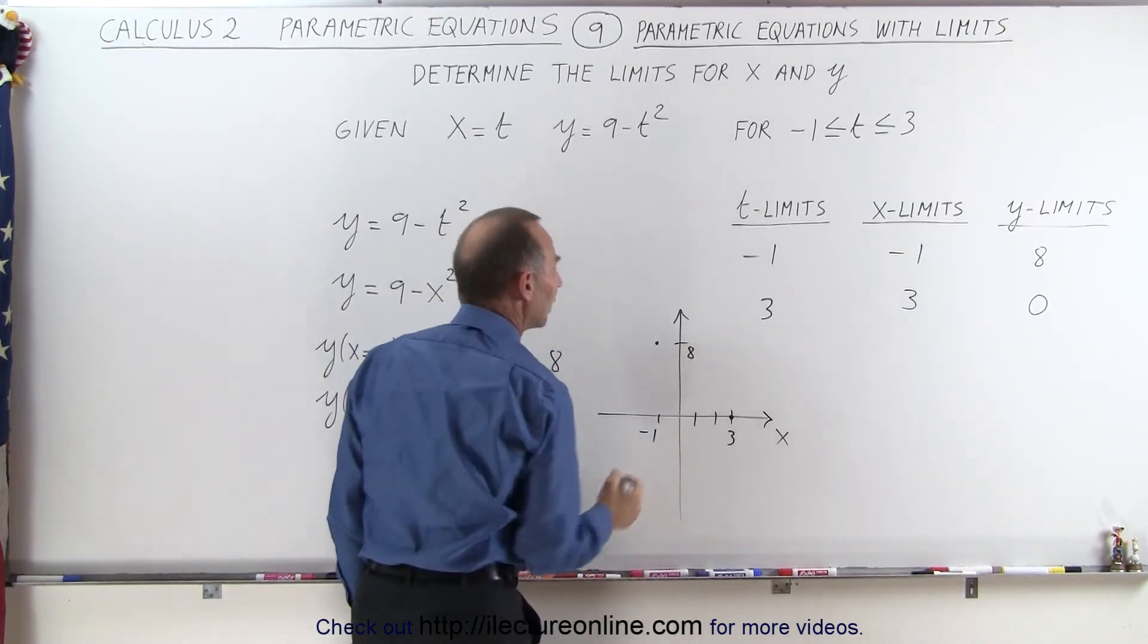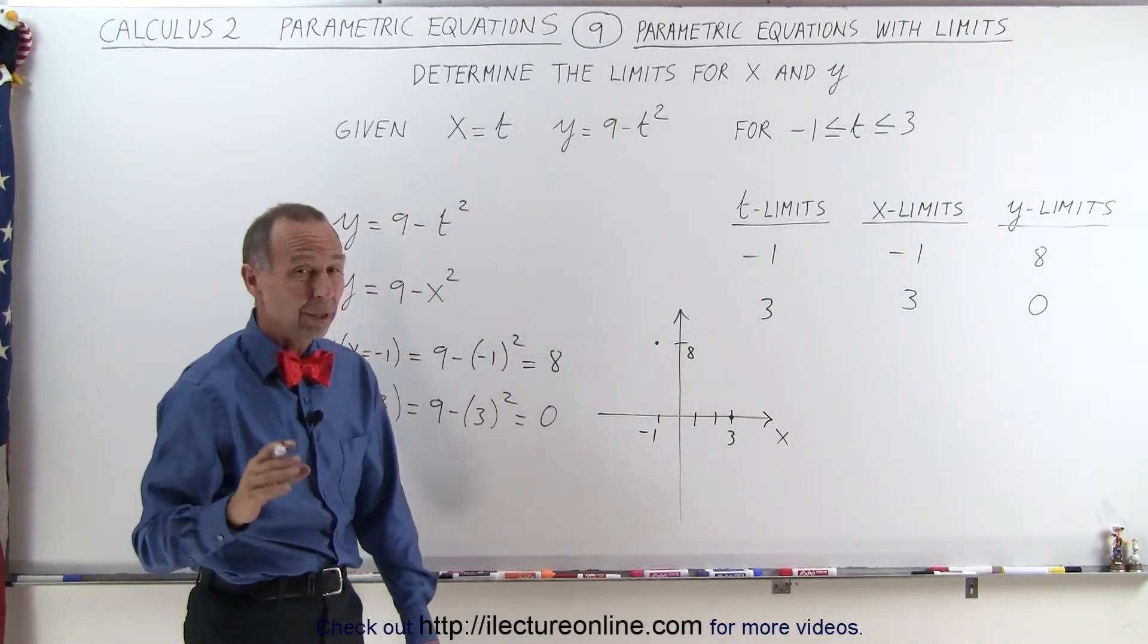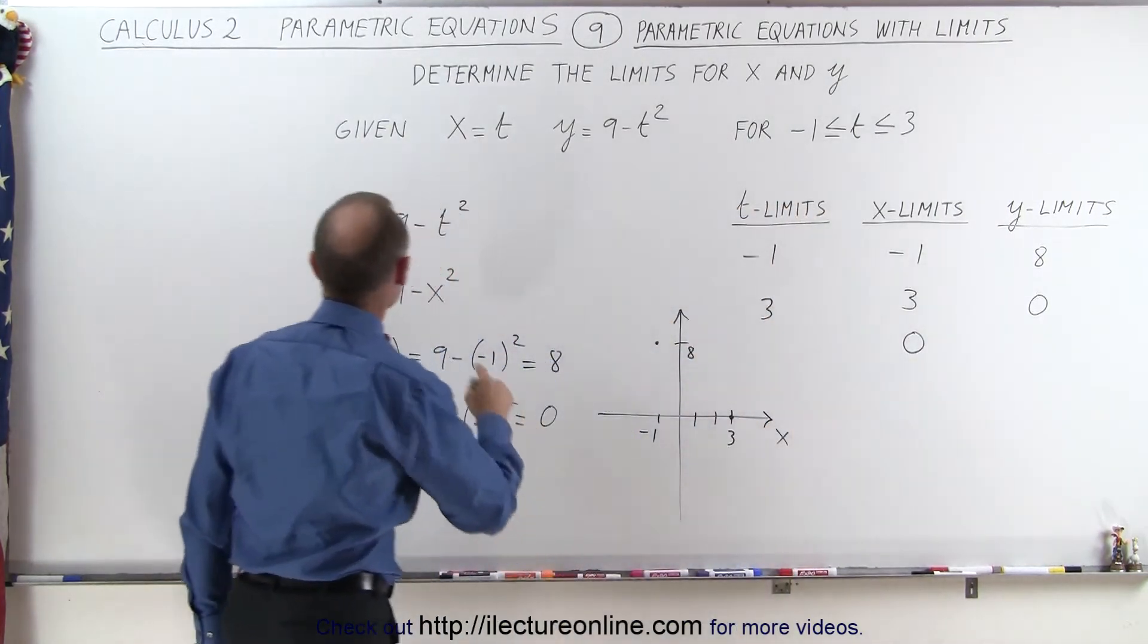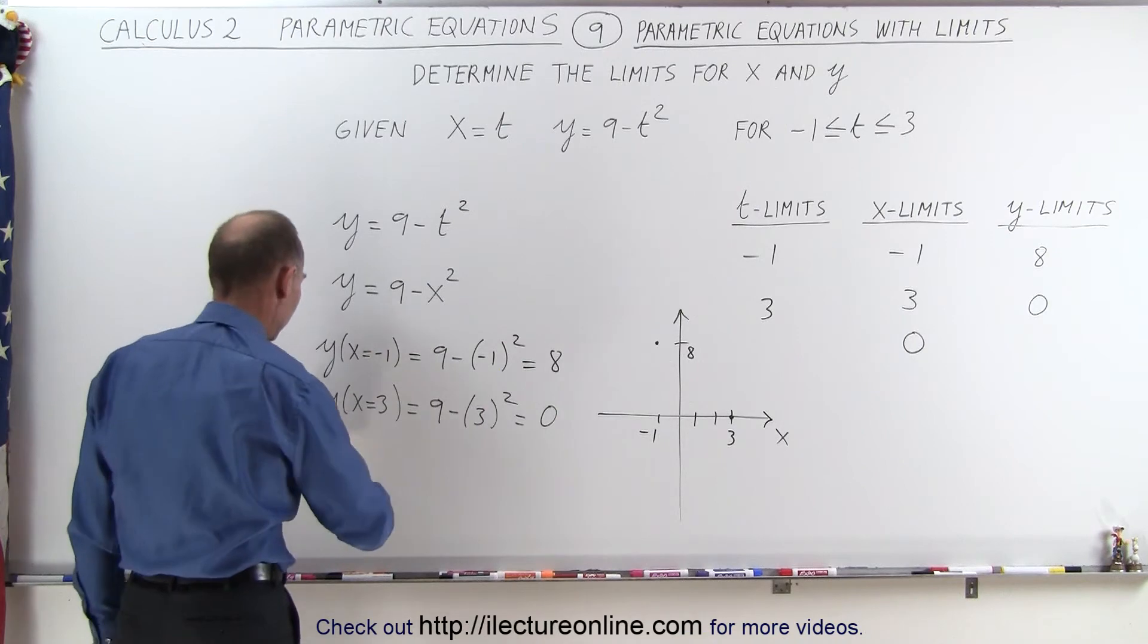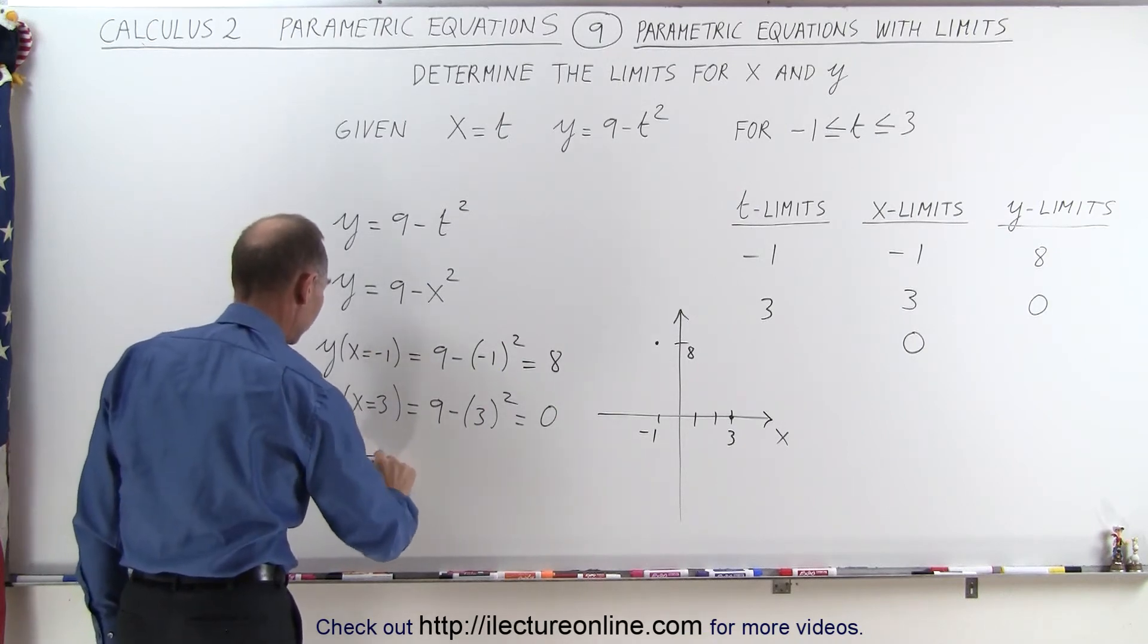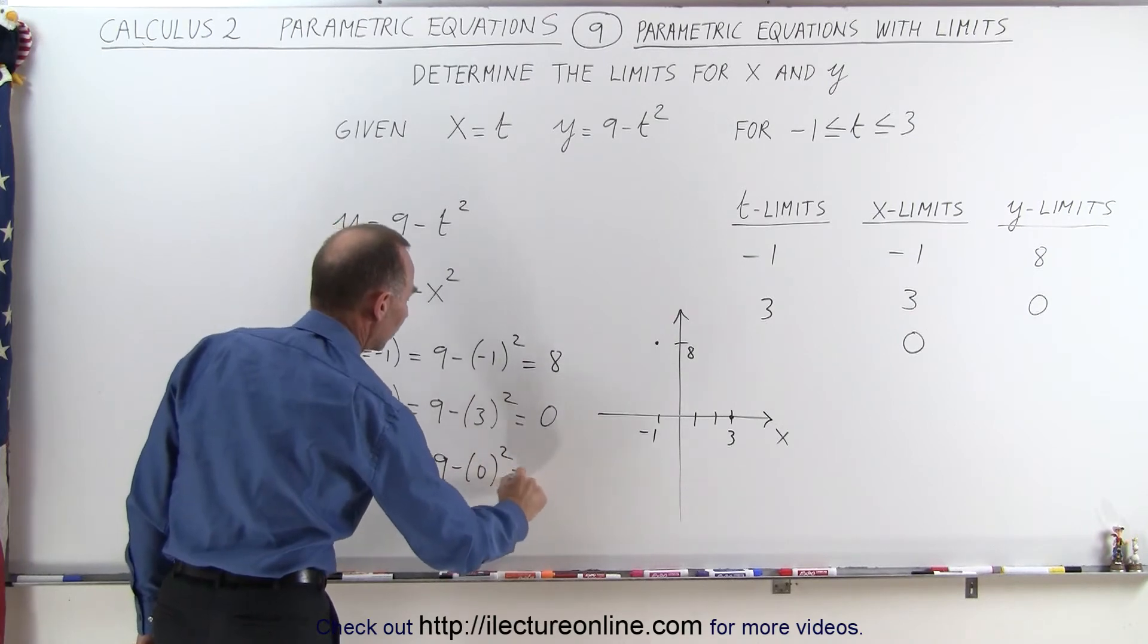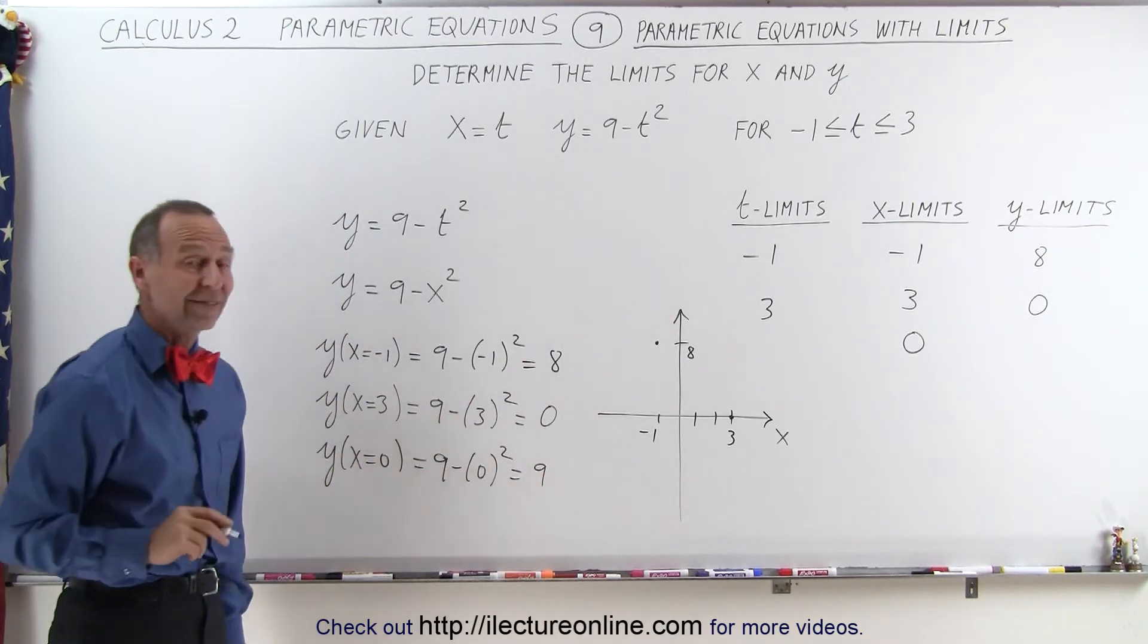But what happens when x is equal to 0? Let's go ahead and plug that value in. When x is equal to 0, we say y, when x equals 0, is equal to 9 minus 0 squared, which is equal to 9, which is not between 0 and 8.